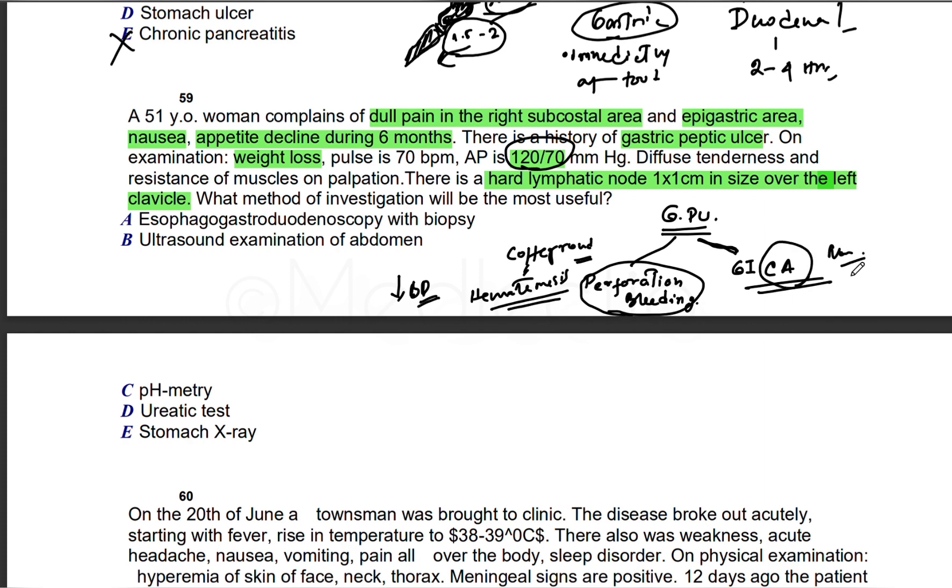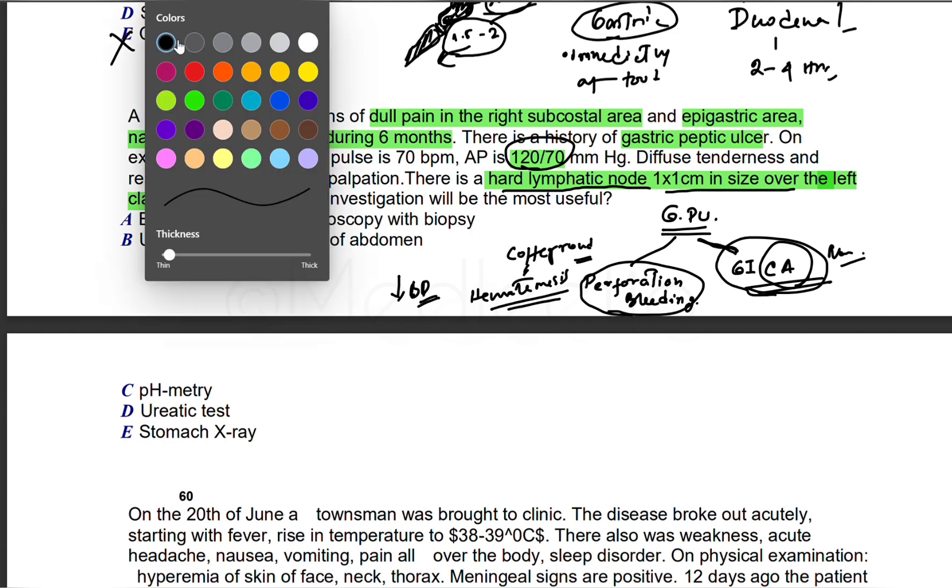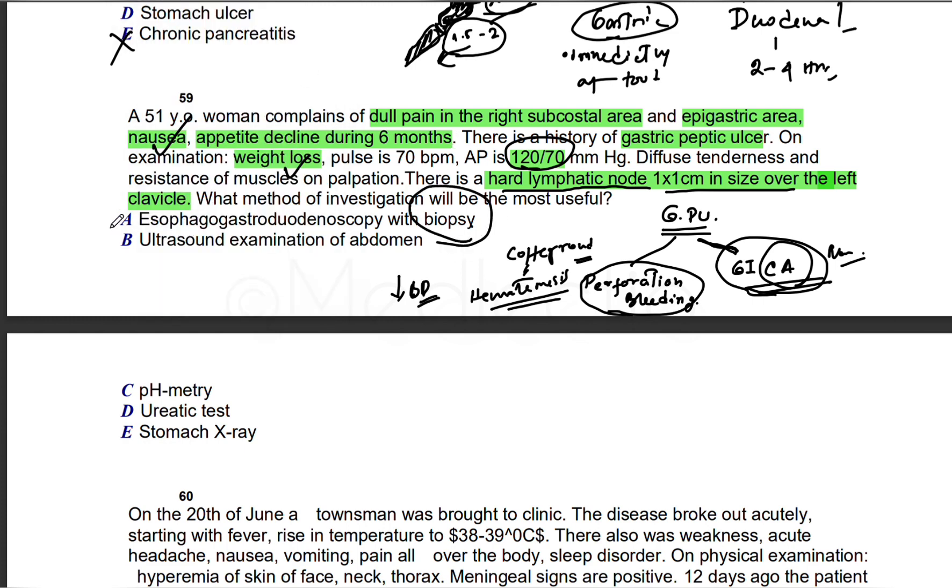The second long-term effect: gastric peptic ulcer or gastritis may convert to gastric carcinoma. In cancer we have non-specific symptoms like weight loss, nausea, and hard lymphatic node—this is cancer. If the node is in clavicle, metastases have already occurred. So we'll do biopsy. Esophagogastroduodenoscopy with biopsy. Stomach X-ray is for perforation. pH-metry for H. pylori. In perforation on X-ray we see gas under diaphragm. Ultrasound examination—nothing used here.